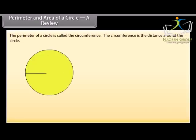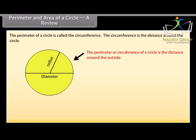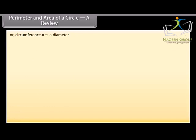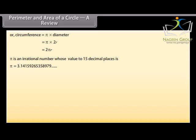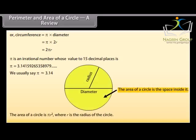Perimeter and area of a circle — a review. The perimeter of a circle is called the circumference. The circumference is the distance around the circle. The ratio of circumference to its diameter is constant, denoted by pi. Circumference equals pi times diameter, which equals 2 pi r, where r is the radius. Pi is an irrational number whose value to 15 decimal places is 3.14159265358979. We usually say pi is approximately equal to 3.14. The area of a circle is pi r squared.